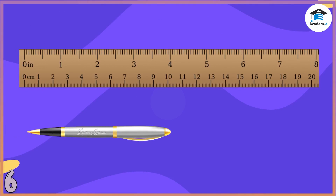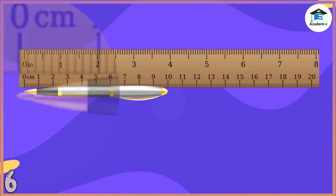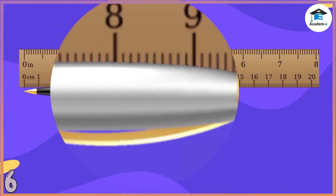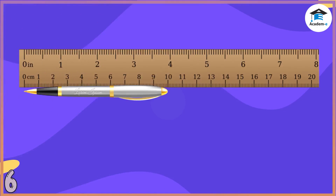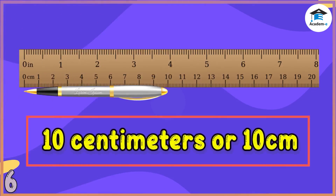Here is a ruler and a ball pen. Let us measure this ball pen. Put the ball pen beside the ruler and place the tip of the ball pen at the zero mark of the ruler. Then look at the other end — the tip ends at 10 centimeters. Therefore, the length of the ball pen is 10 cm.